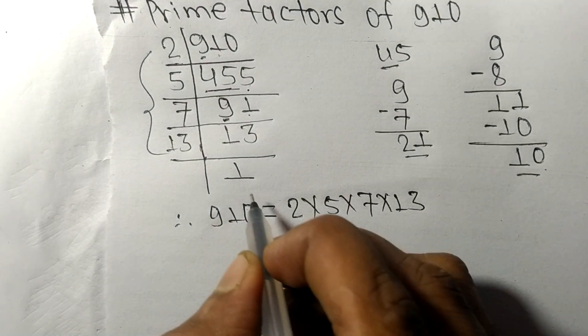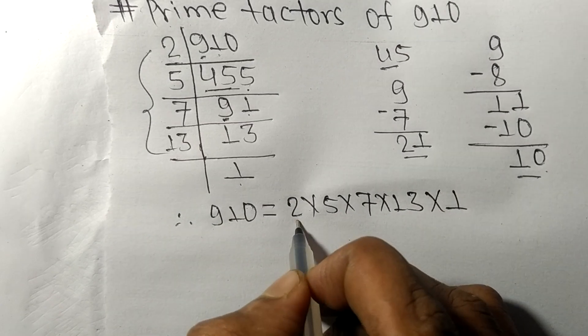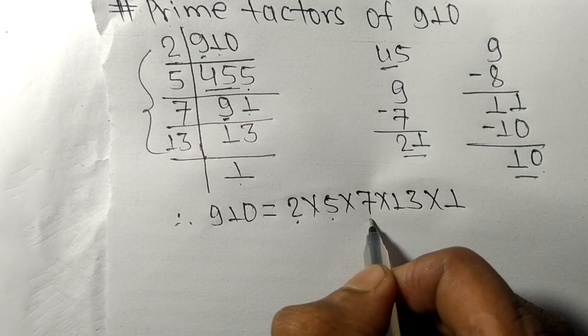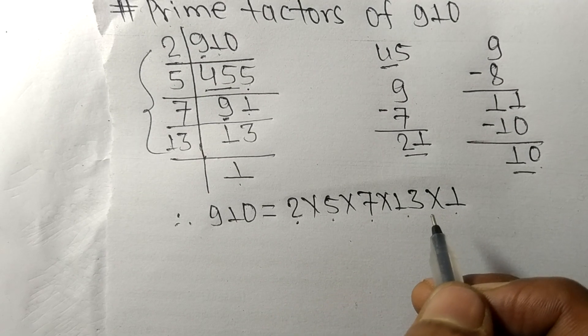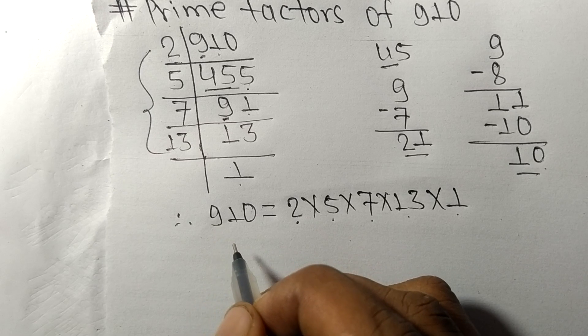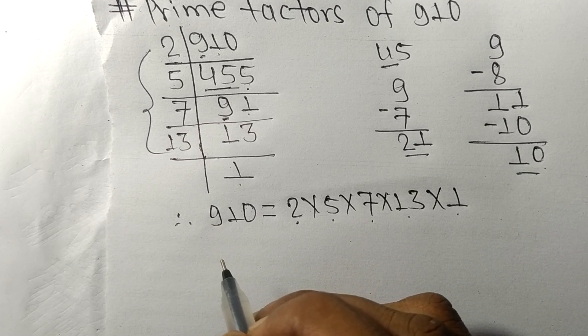From here it is 1, so these 2, 5, 7, 13, and 1 are the prime factors of 910. So this much for today and thanks for watching.